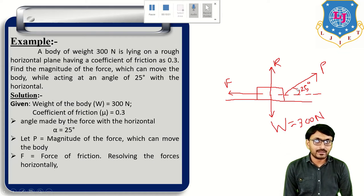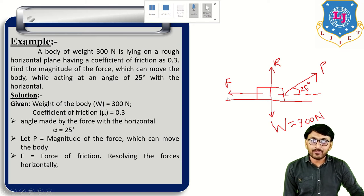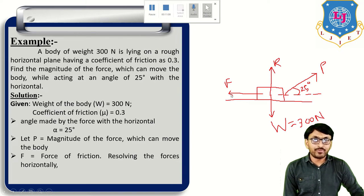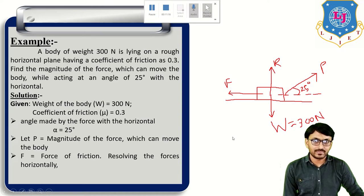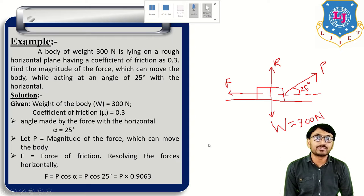First step: resolving the forces horizontally. In the diagram there are two horizontal forces — friction F in one direction and the horizontal component of P, which is P cos 25°, in the opposite direction. So F = P cos alpha = P cos 25° = 0.9063P.